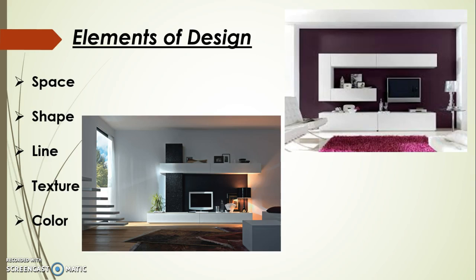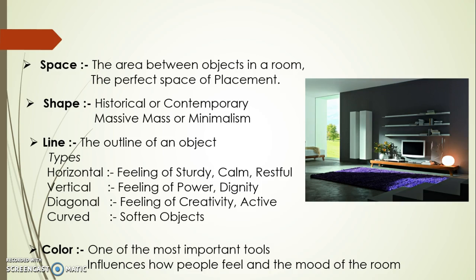Under the heading of elements of design, we have categorized them into five different headings: namely, space, shape, line, texture, and color. Space depicts the area between objects in a room, whereas the shape of an element reflects its style — whether it is historical or contemporary, massive or minimalist.